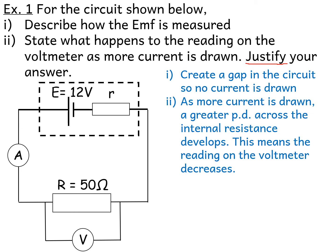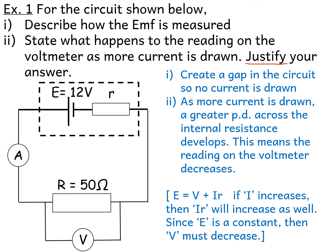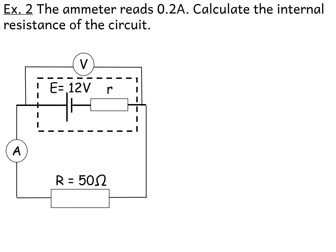You can justify using words or an equation. Word answer: as more current is drawn, a greater potential difference across the internal resistance develops, so the voltmeter reading (VTPd) decreases. Equation answer: using E = V + Ir — if I increases, Ir increases; since E is constant, V must decrease. Both approaches are valid. Memorization is a last resort; understanding the physics makes it easier to remember.